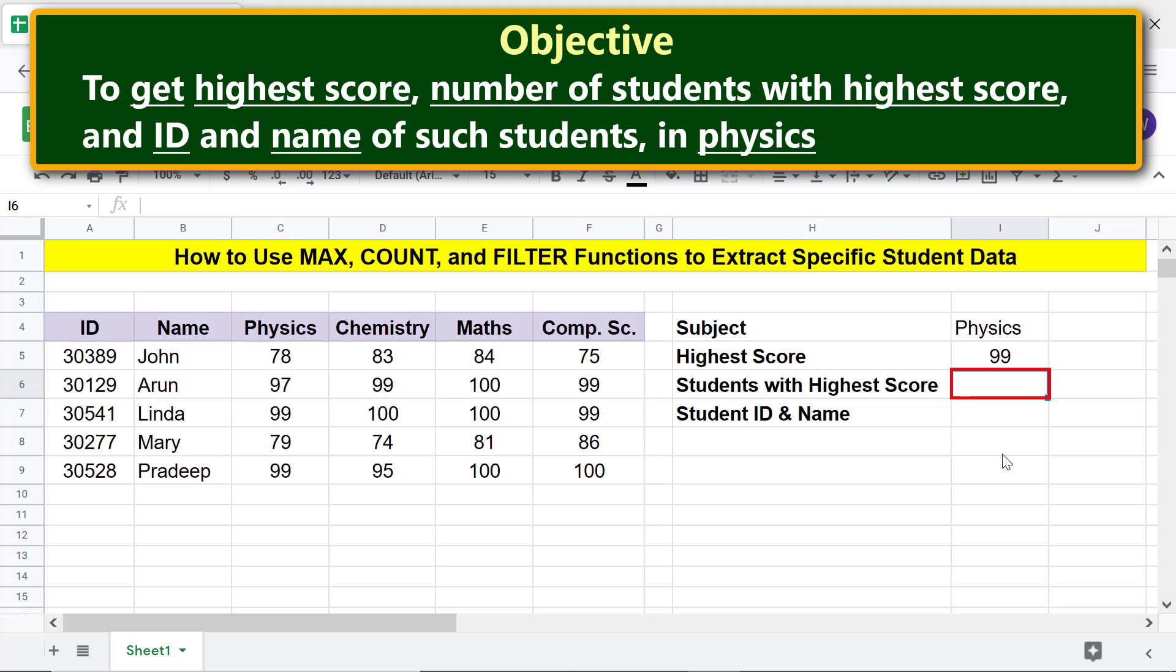That is, we will nest FILTER inside COUNT. Let's take a look at the COUNT and FILTER function formulas. COUNT needs a value as an attribute, and FILTER returns a value. So for the value attribute of COUNT, we can nest the FILTER function inside COUNT. Here is the COUNT-FILTER combo formula.